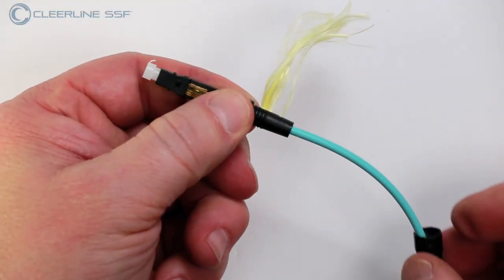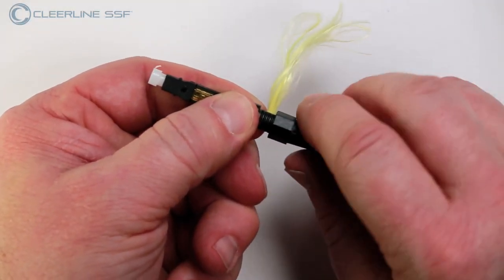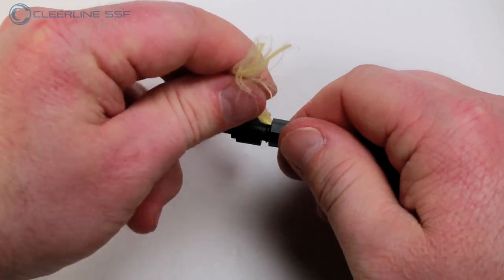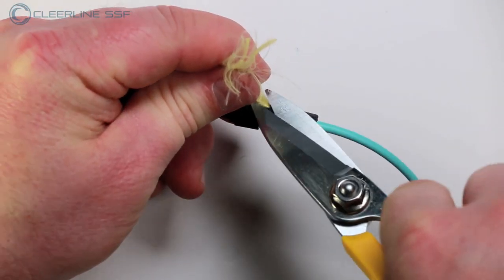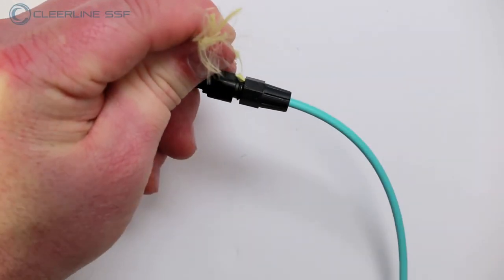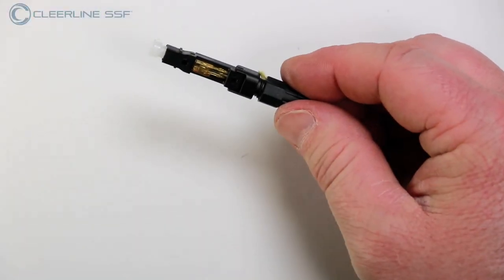To complete the connection, slide the boot forward and thread one full turn to lock in the aramid yarns. Cut the yarns closely to the boot. Tighten the boot until secured.